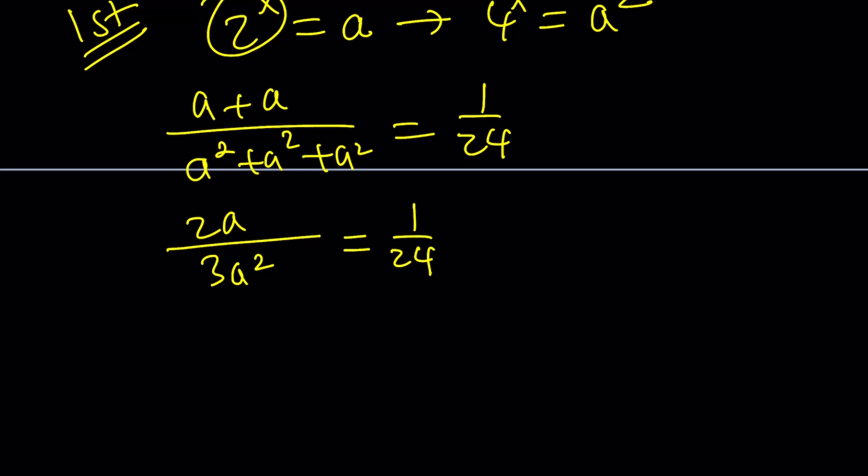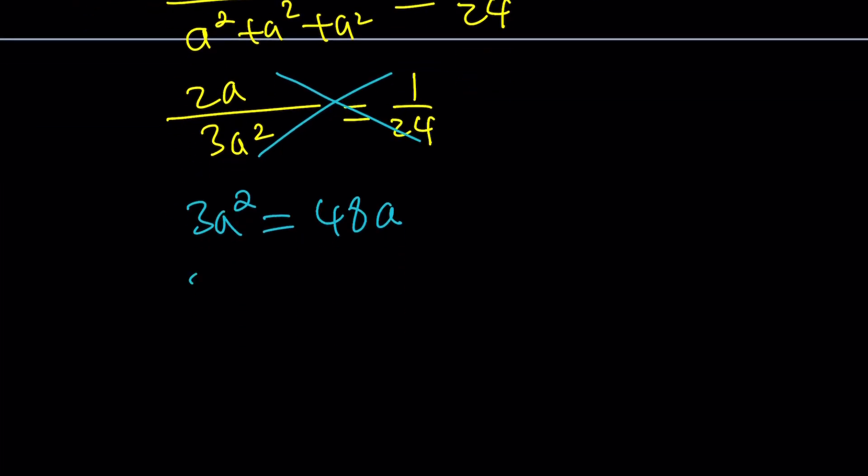Or if you don't want to simplify it, this is fine too. We can go ahead and cross multiply. Because a lot of times with equations, it's usually better not to simplify. So I just cross multiply. And then again, I know it's tempting. You want to simplify. You want to cancel out things. Don't do it. Put everything on the same side. It's safer.